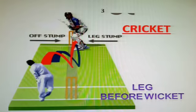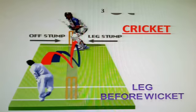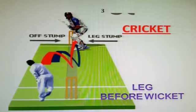The LBW rule is designed to prevent a batsman simply using his body to prevent the ball from hitting the wicket, rather than using his bat to do so.